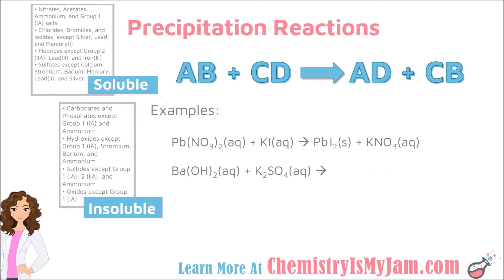Let's do another example: barium hydroxide combined with potassium sulfate. This is a double replacement reaction, so predict the products. Barium ends up with sulfate, giving barium sulfate, and potassium ends up with hydroxide, giving potassium hydroxide. Go to the solubility rules and focus on the sulfate. All sulfates are soluble except calcium, strontium, barium, mercury, lead, and silver. Barium is one of the exceptions, so barium sulfate is insoluble — list solid as the state of matter.